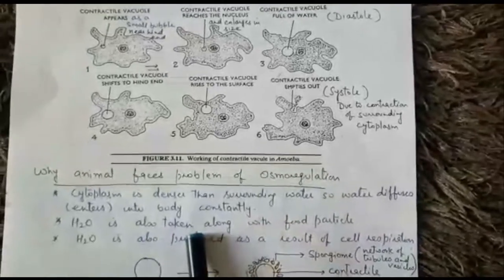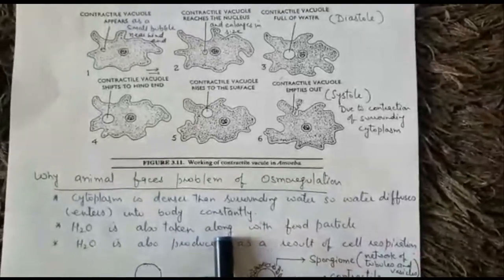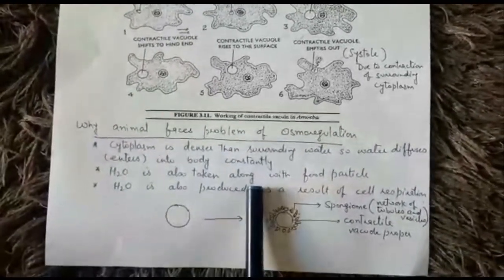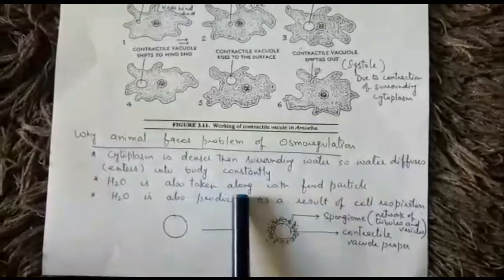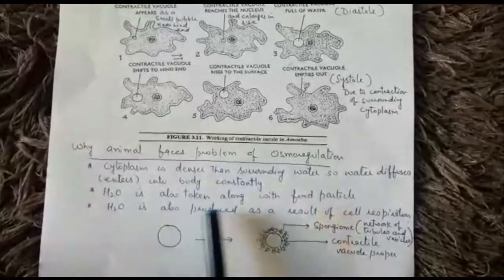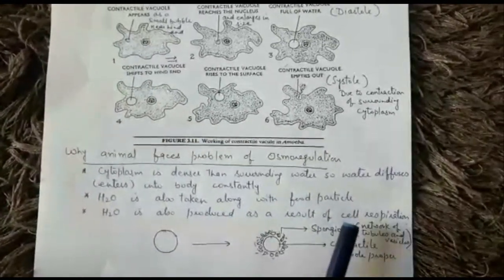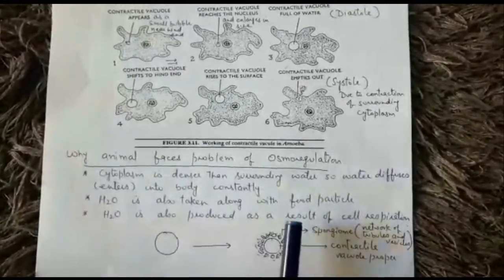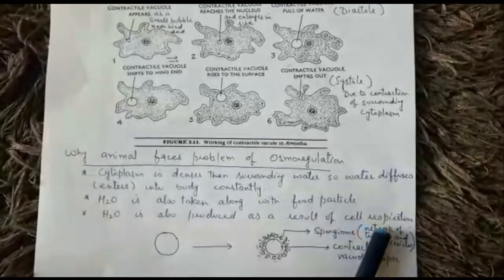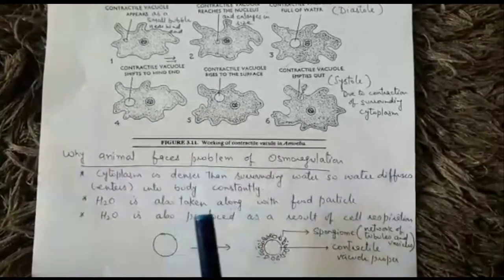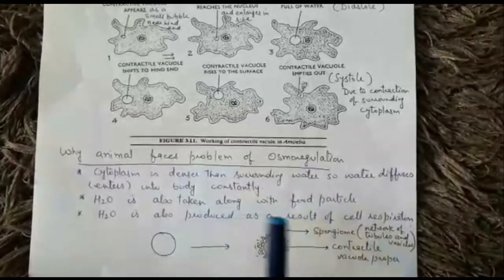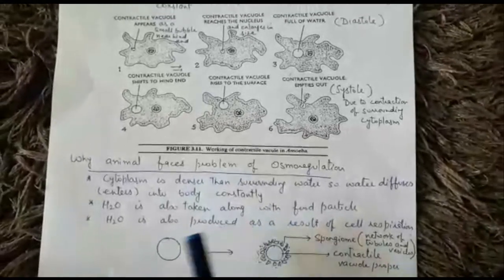Water continuously enters the body by osmosis. Additionally, it takes in water along with food material because it lives in water — in every method of ingestion, a droplet of water enters the body along with food. Water is also produced as a result of cell respiration: when food breaks down, it produces carbon dioxide and water. If water keeps entering continuously, the body will swell up and burst.